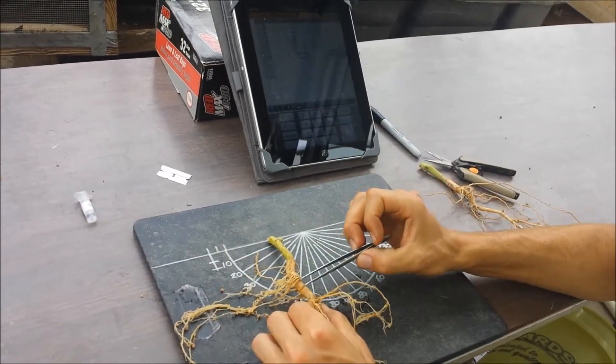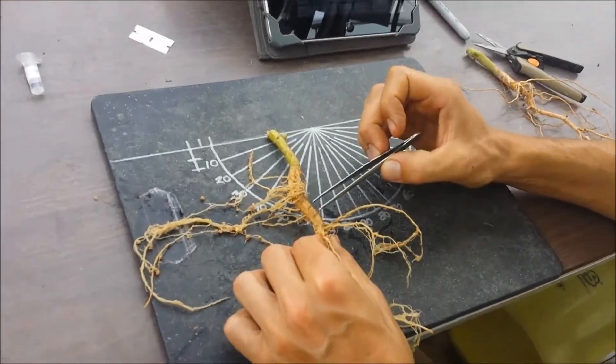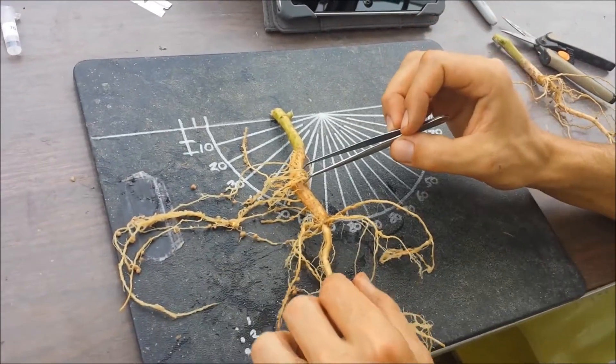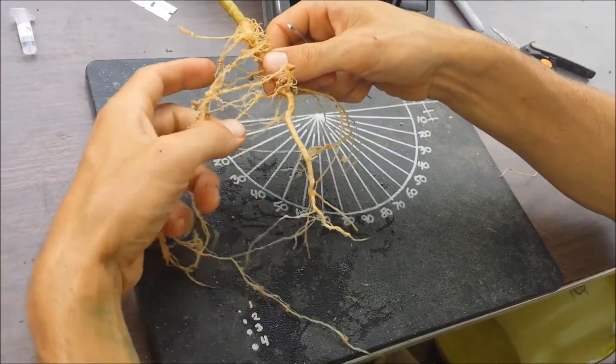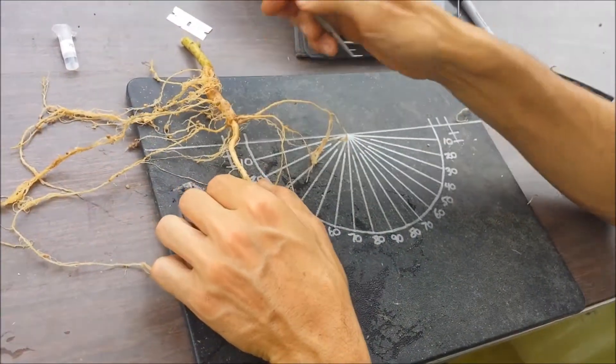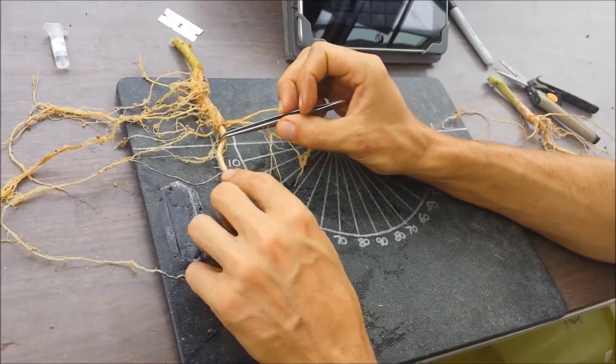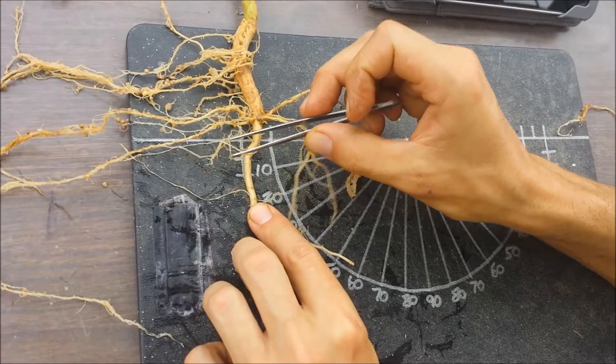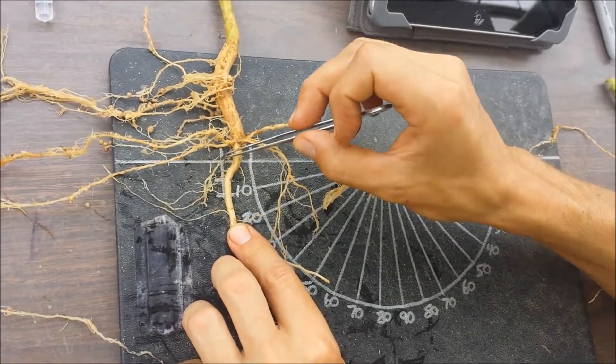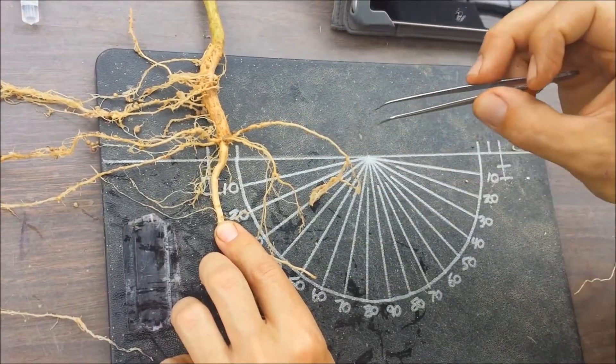Then I would count the number of adventitious roots, which are all the roots there. I might measure taproot branching density. To do that, I would take a representative section of the taproot and count the number of first order laterals in a two centimeter segment. That's why I have these lines marked on the board.